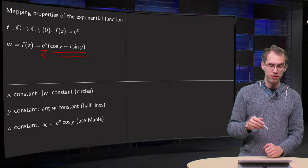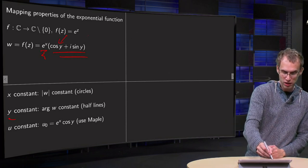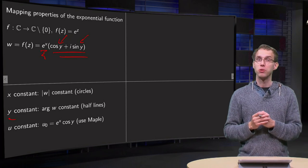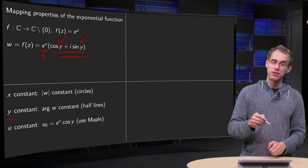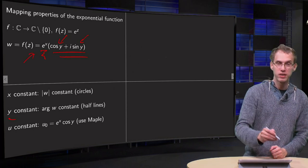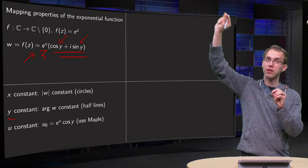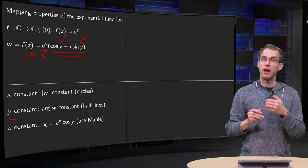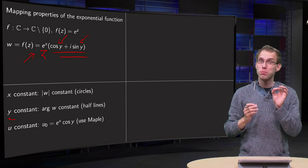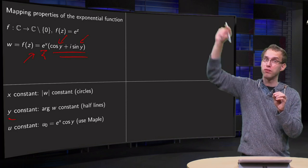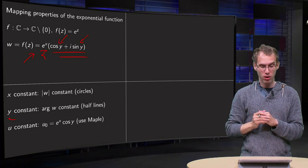So what happens if y is constant? If y is constant then cos y + i sin y is constant, so in that case the argument of w is constant and the norm e^x can take all positive values. So in that case we have a constant argument and a varying norm, whereas the norm is always positive. So we get half lines starting from the origin. The origin is not part of the line; we start at the origin but we go up to infinity along a line.